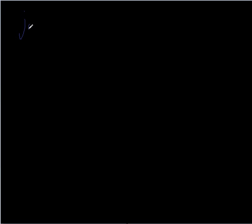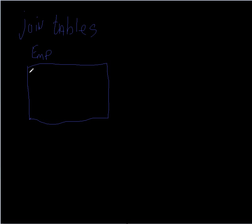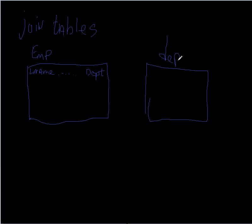The second use case is joining tables together. To get as much redundancy out of a database as possible, we break down different pieces of information. For example, if we have an employee table with a department column, we might have a separate departments table where 10 is Denver, 20 is Phoenix, and so on.